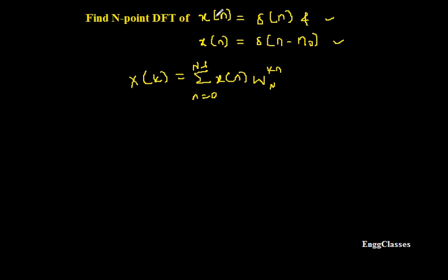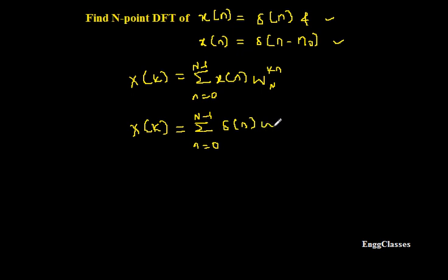First, the task is x(n) = δ(n). X(k) = summation from n=0 to N-1, in place of x(n) I will put δ(n) · W_N^(k·n). To simplify this further, just expand this summation by putting n equal to 0, 1, till N-1. First I will put n equal to 0.